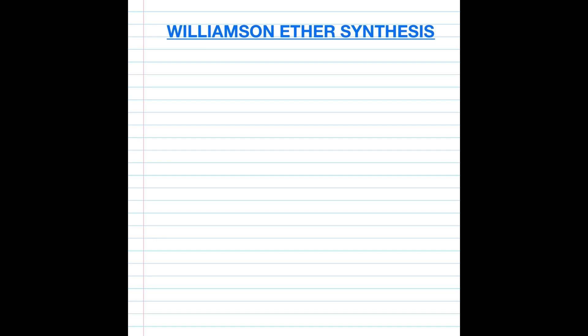The Williamson ether synthesis involves a reaction between an alkyl halide, for example alkyl fluoride, plus an alcohol. This reaction requires a base, and the product is going to be an SN2 substitution where you now form a new bond between that carbon and the alkoxy group.